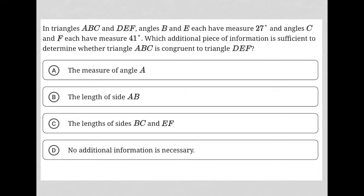This question says in triangles ABC and DEF, angles B and E each have measure 27 degrees and angles C and F each have measure 41 degrees. Without telling us, basically what this question is saying is that these two triangles are similar. Triangle ABC is similar to DEF.